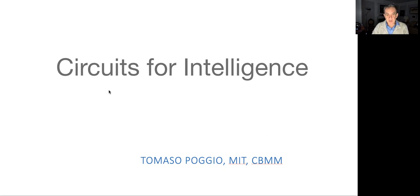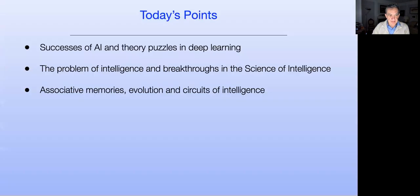I'd like to thank all the organizers for the invitation to this event. The broad topic I want to speak about is the science and technology of intelligence. Intelligence is a great problem in science, probably the greatest of all great problems in science. So the question is, where are we in the science and engineering of intelligence? Where is artificial intelligence and our understanding of the brain going to go? That's the topic.